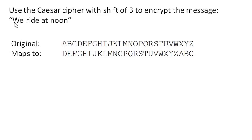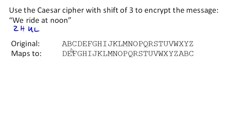To encrypt 'we write at noon,' we simply encrypt each character. W maps to Z, E maps to H — and typically we do everything in uppercase. R maps to U, I maps to L, D maps to G, E maps to H, A maps to D.